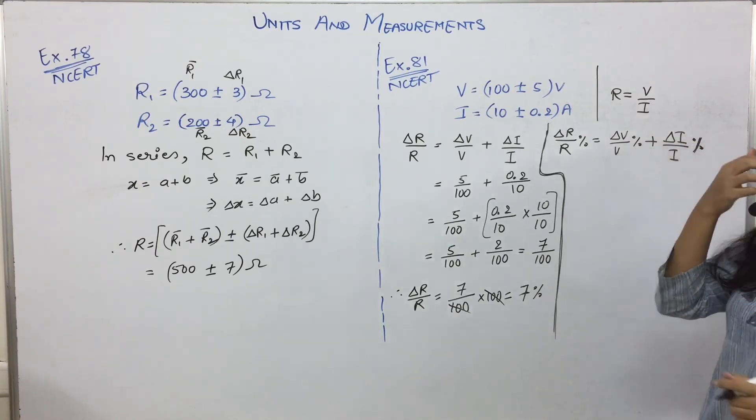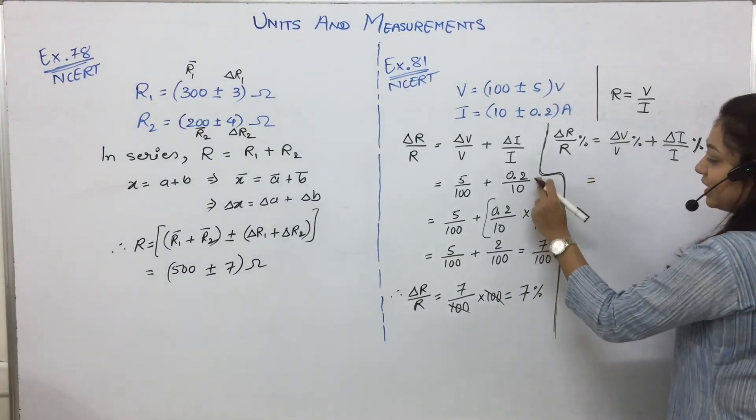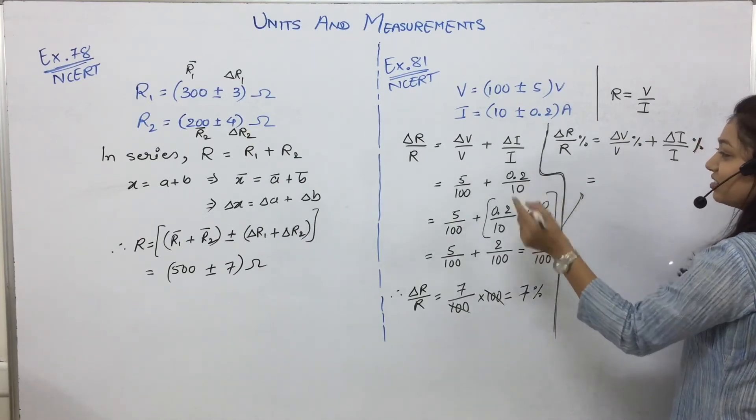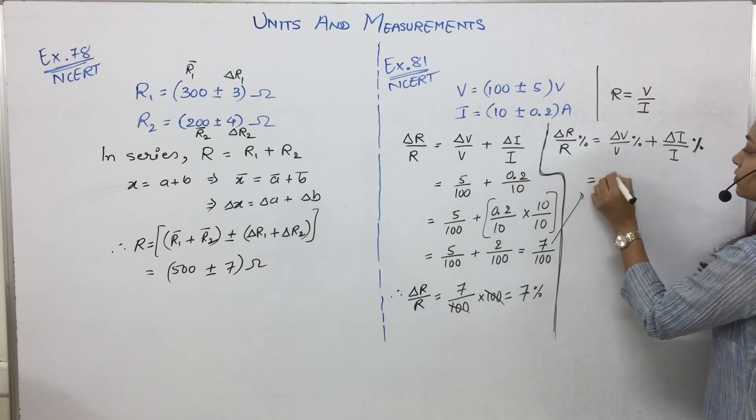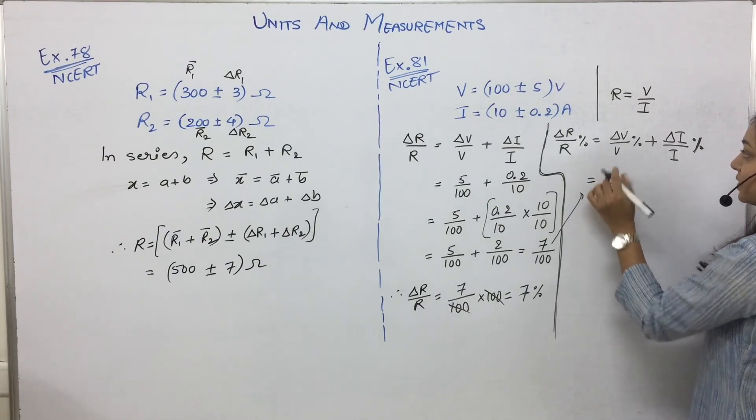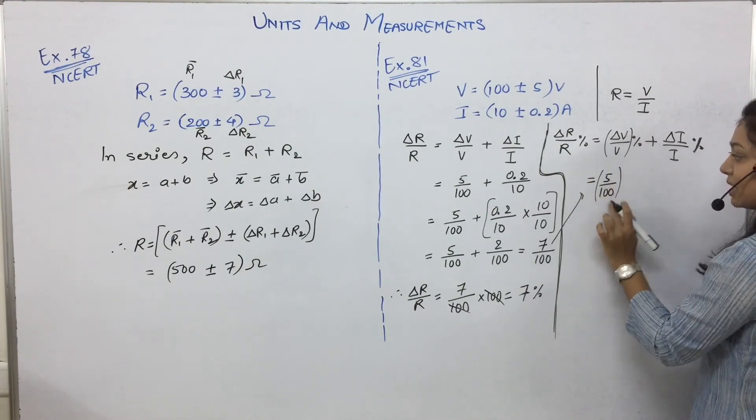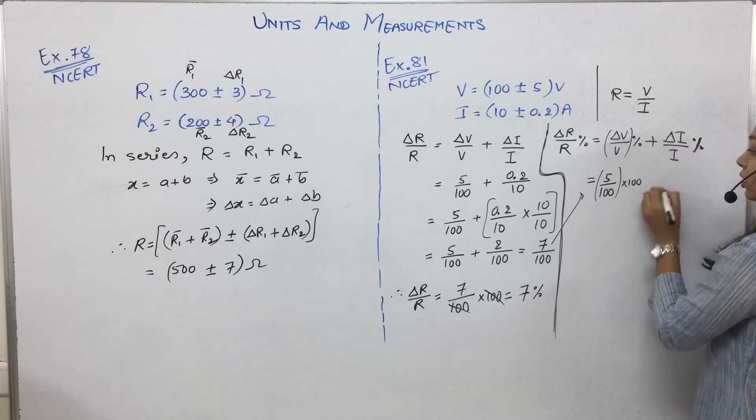I am not writing those two steps, I am writing this directly. Right? You can repeat the right side portion. So this is what? 5 upon 100, this is our delta V by V. If I am writing percentage, then this will be into 100.